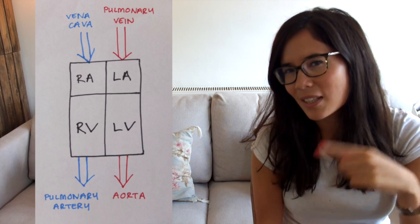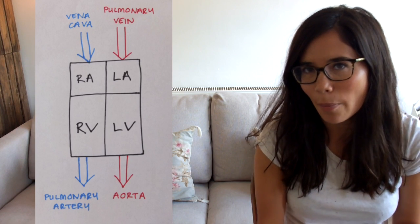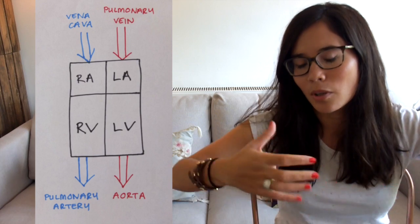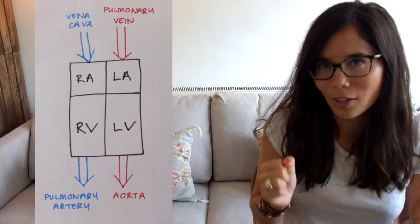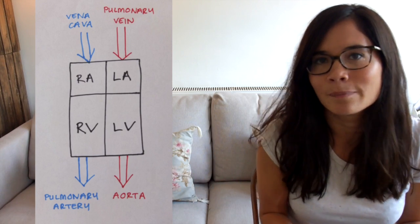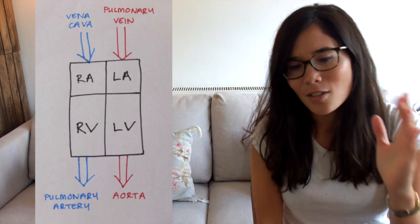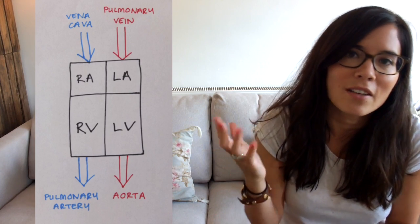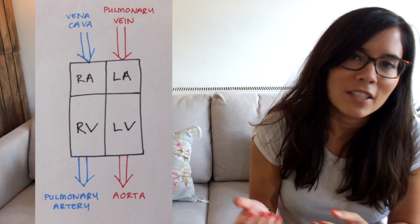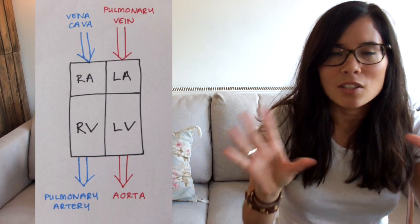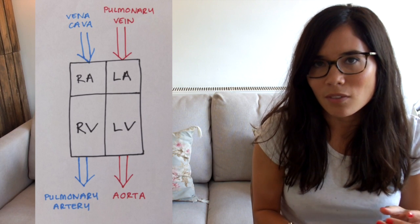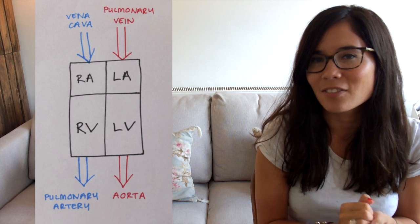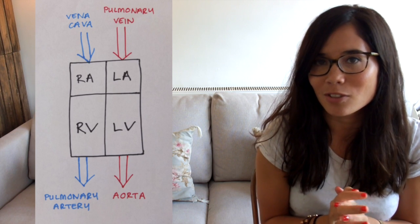Make sure you get the left and right sides the right way around. It's the opposite way to how you would write it on a piece of paper, and that's because if you picked it up and put it on yourself, you'd see that they'd flip over and it would make sense. So on the left hand side you have the right atrium, on the right hand side you have the left atrium, and underneath are the much larger compartments - the left and right ventricle.